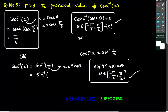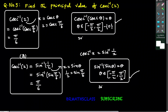Sin inverse of — from the trigonometry table, 1 by 2 is sin 30 degrees. 30 degrees we will write in radian measure as pi by 6. So we have sin inverse of sin pi by 6. This expression is of the form sin inverse of sin theta. Pi by 6 means 30 degrees — is 30 degrees in the closed interval minus pi by 2 to pi by 2? Yes. So sin inverse of sin pi by 6 is pi by 6. In the first method also we got pi by 6, and in the second method also we got pi by 6.